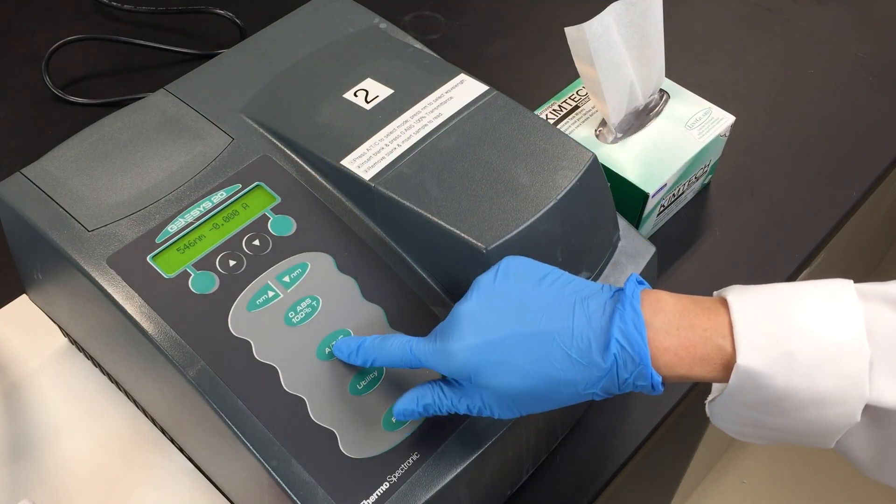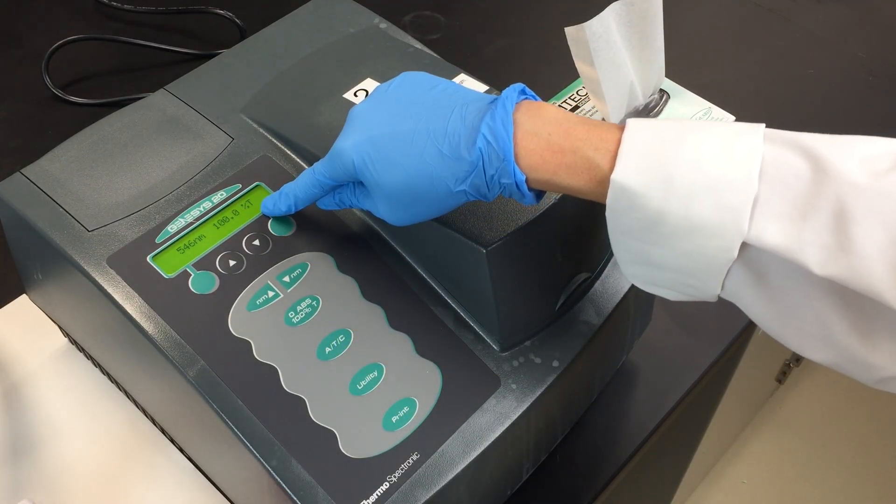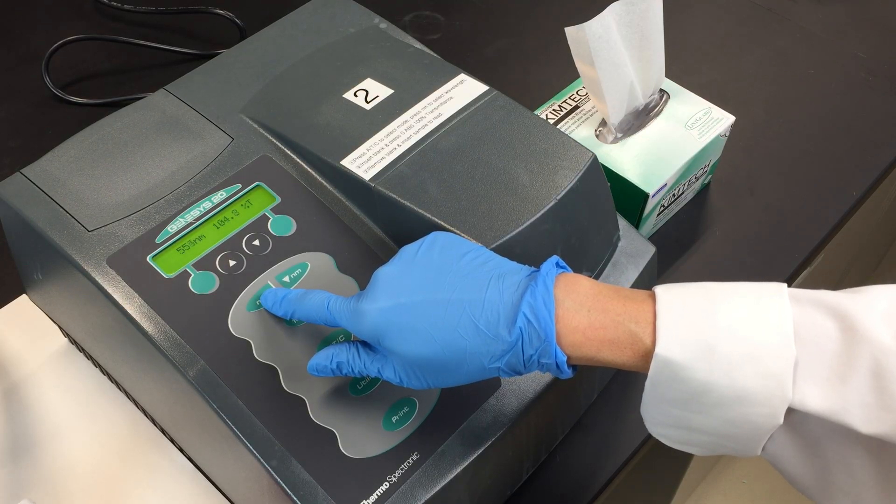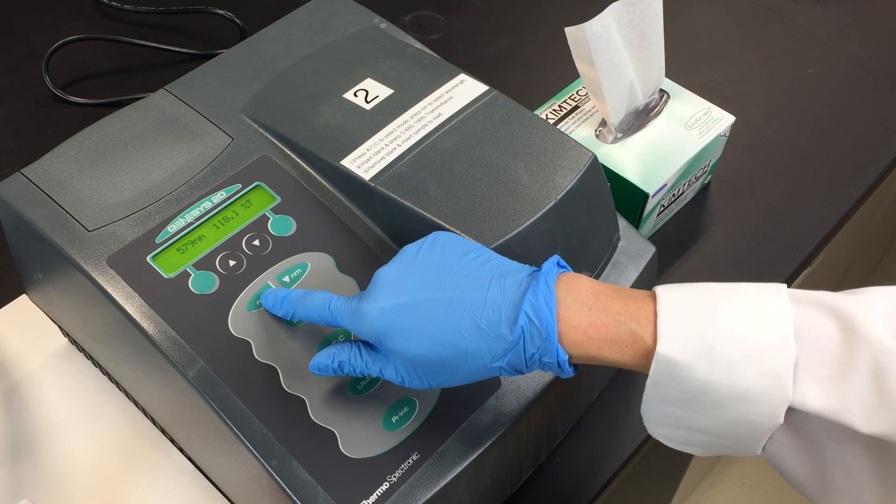Press the ATC button to change to percent transmittance and press the nanometer up and down buttons to set the wavelength to 625 nanometers.